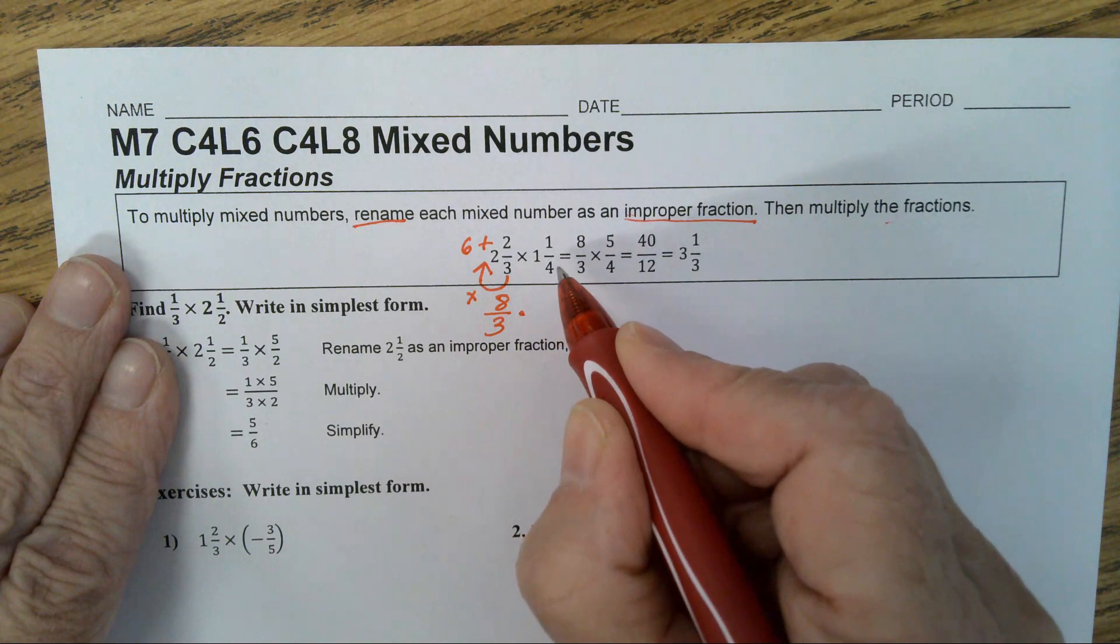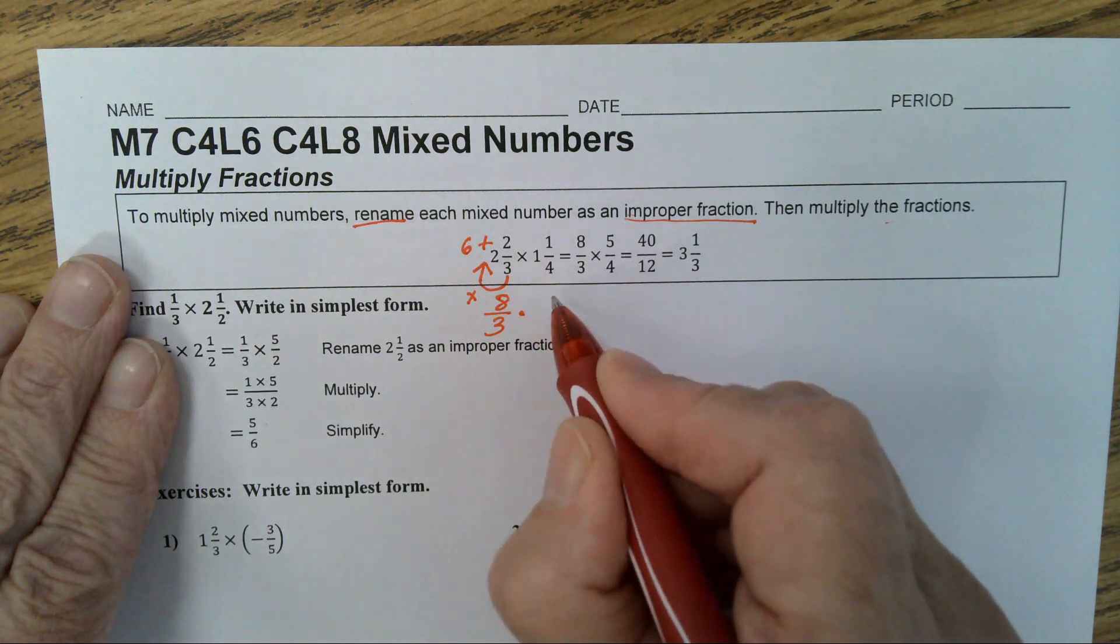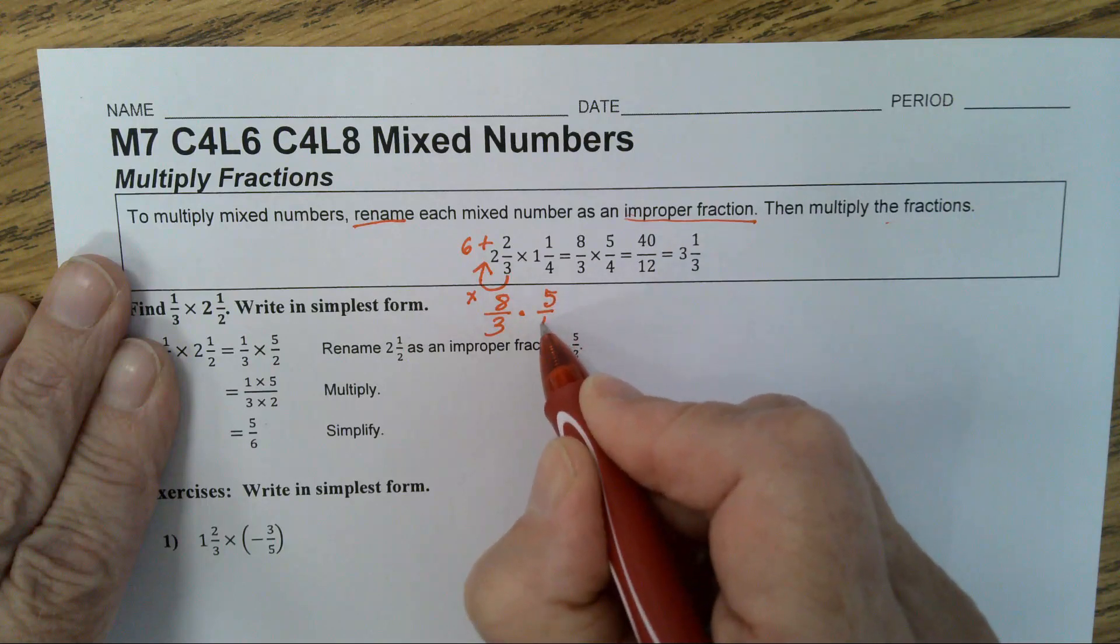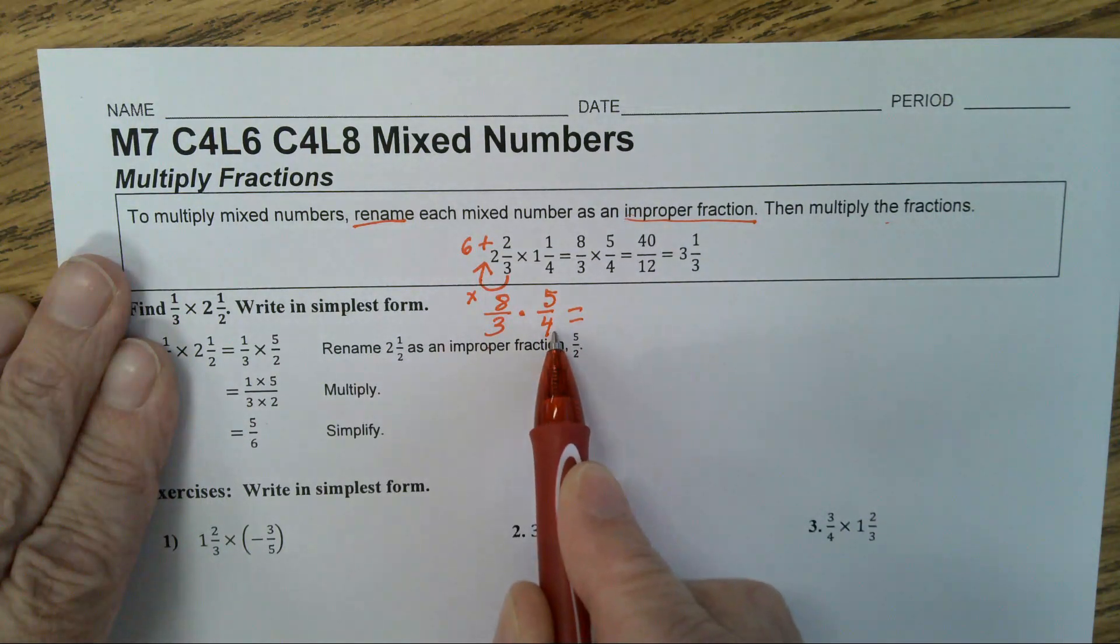The same thing here. 4 times 1 is 4. Plus 1 is 5. 5 over 4. Now you have 8 thirds times 5 fourths.